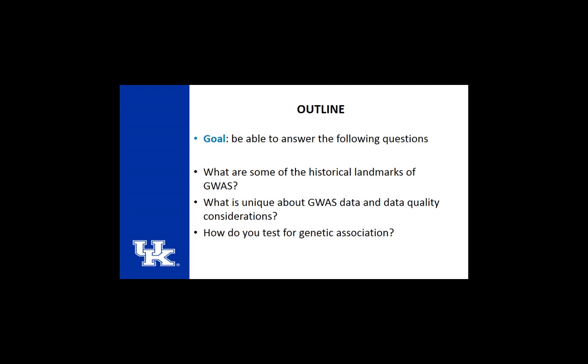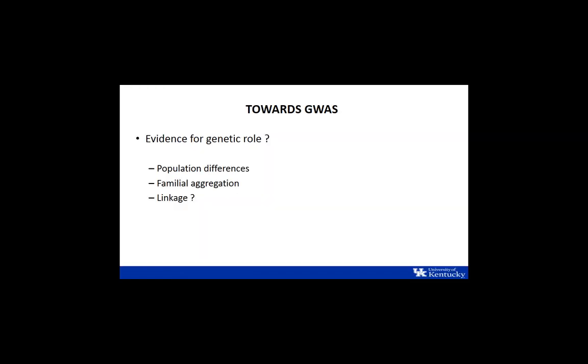What's unique about GWAS data and its quality control? And then how do you test for genetic association? There are tons of ways to test for genetic association. We're going to do very focused, limited ways of testing for genetic association. But seeing some of the possibilities and some of the history will hopefully let you get a feel for what we'll be doing tomorrow.